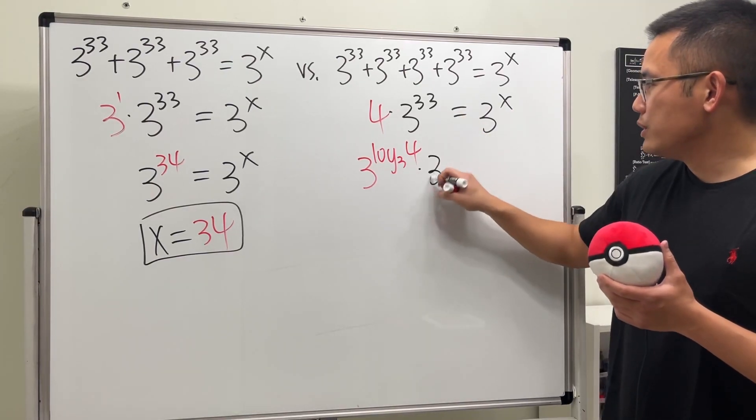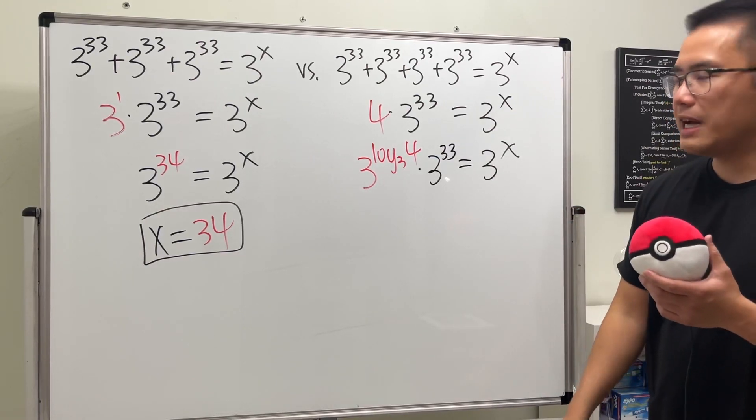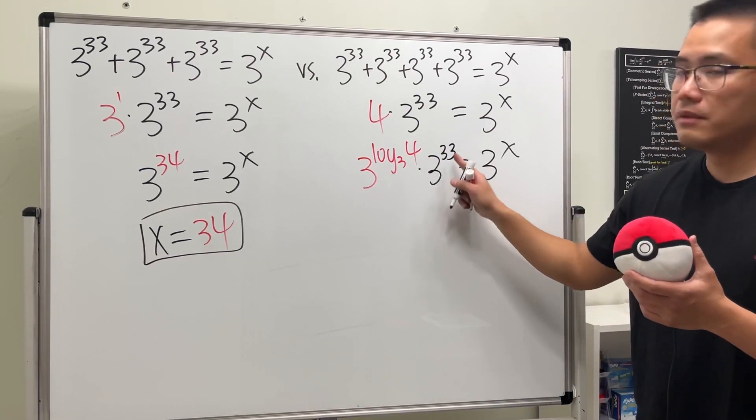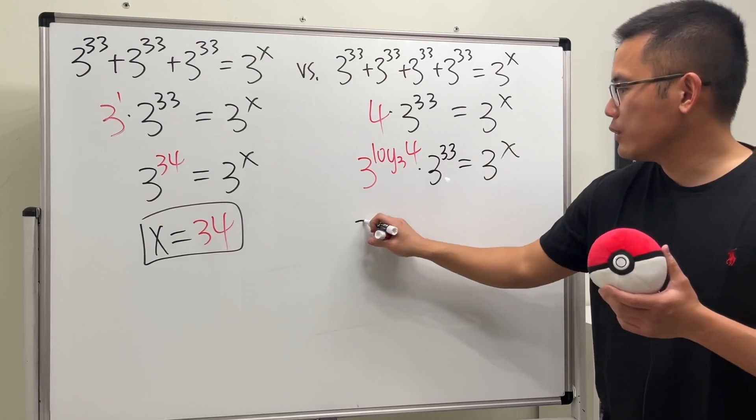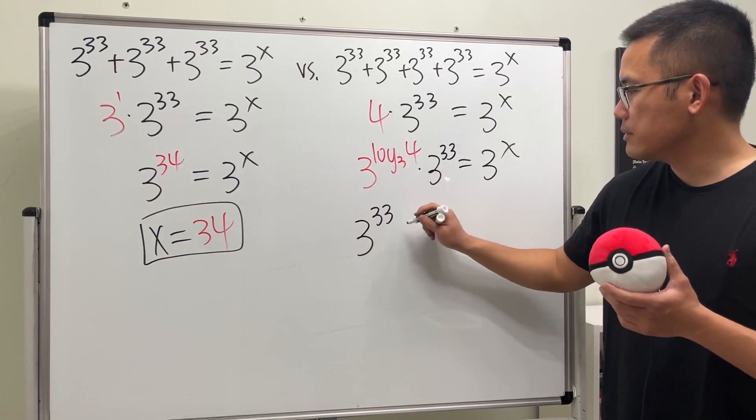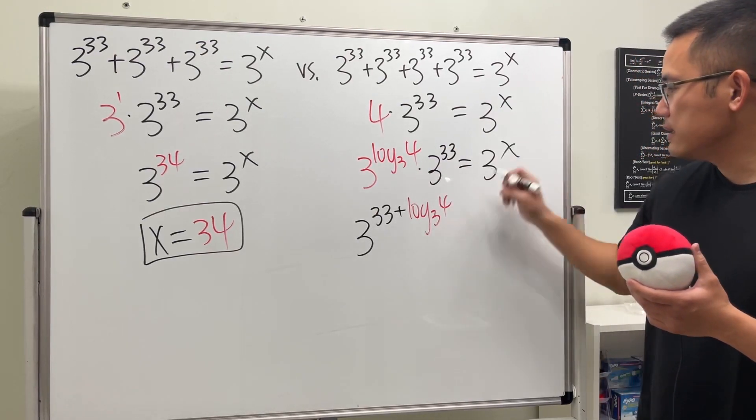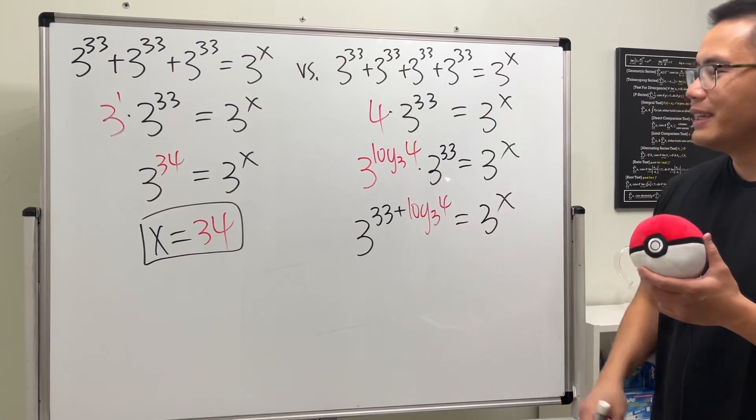Then we multiply by 3^33, and that equals 3^x. This time, when we multiply, we still add the exponents, so we're looking at 3^(33 + log₃4) = 3^x. Same story.